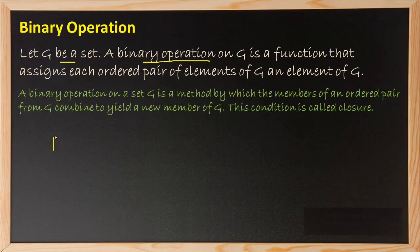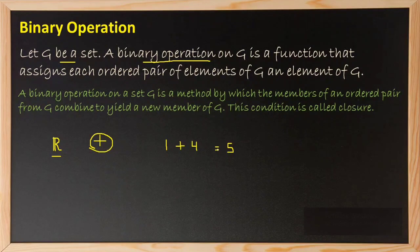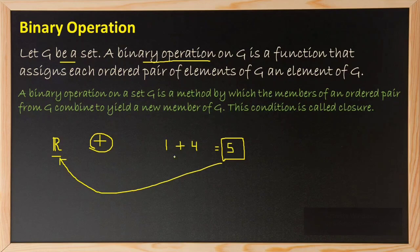Let us take the set of real numbers as an example. We will check whether ordinary addition on the set of real numbers forms a binary operation or not. Let me pick any two elements: 1 and 4 — both are real numbers. Now 1 plus 4 gives me 5, and 5 is also a real number. The resultant belongs to the set from where we started. So ordinary addition forms a binary operation on the set of real numbers.